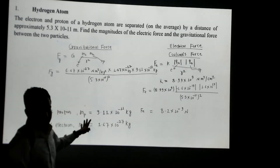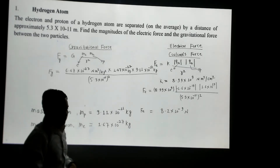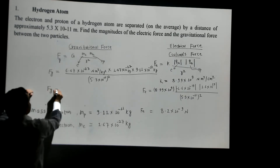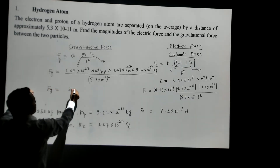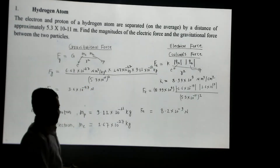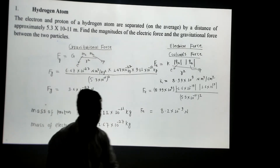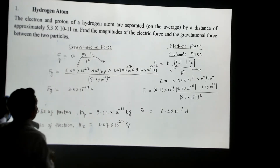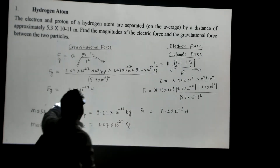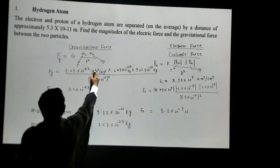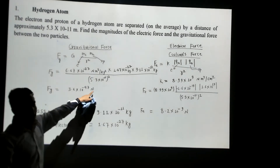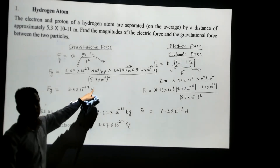The distance is 5.3×10⁻¹¹ meters, squared. Once you do the math, the answer you get for the gravitational force is 3.6×10⁻⁴⁷ newtons. Note that the kg² cancels with kg·kg, and the m² cancels with m², leaving only newtons as the unit.